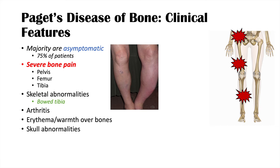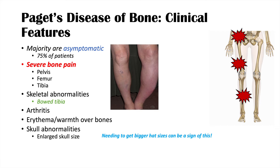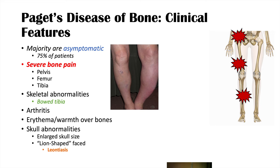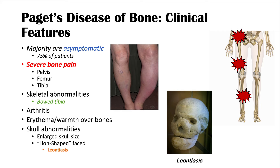There are also skull abnormalities. The skull can become enlarged as osteoblasts build a lot of bone there. We also see something called leontiasis — a lion-shaped face — due to Paget's disease affecting the skull, where osteoblasts remodel and build bone so much that it reshapes the skull. With all of this bony activity in the skull, patients can present with new onset of headaches and migraines, which in an older patient may be a clue to this condition.